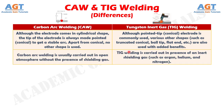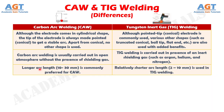Number 7: Carbon arc welding is usually carried out in open atmosphere without the presence of shielding gas, whereas TIG welding is carried out in the presence of an inert shielding gas such as argon, helium, and nitrogen. Number 8: A longer arc length, from 10 to 30 mm, is commonly preferred for carbon arc welding, whereas a relatively shorter arc length, from 2 to 10 mm, is used in TIG welding.